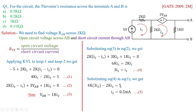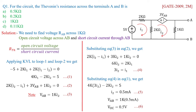I2 equals 5 divided by 10K amperes, which becomes 0.5 milliamperes. This is the current flowing through the 1 kilo ohm resistance. The voltage across 1K equals 1K multiplied by 0.5 milliamperes, so the open circuit voltage is 0.5 volts. Let me frame this as equation 6 so it is easy to solve the next part of the problem.